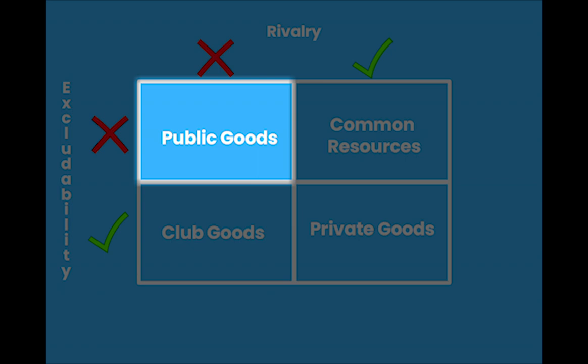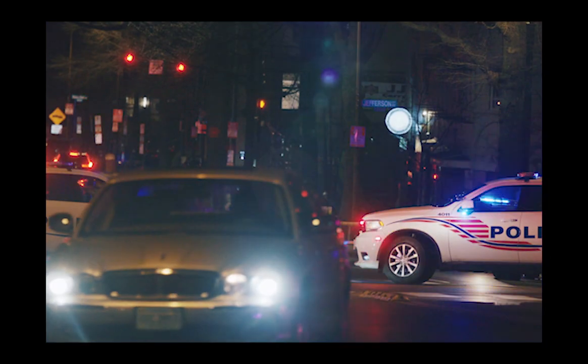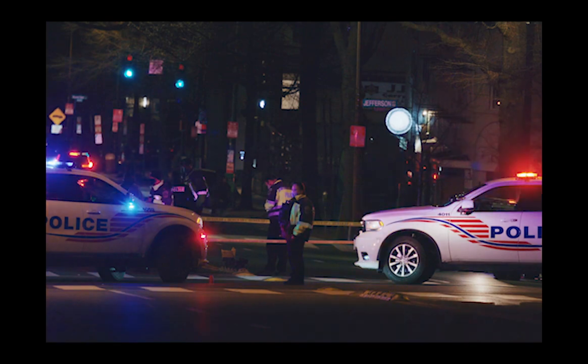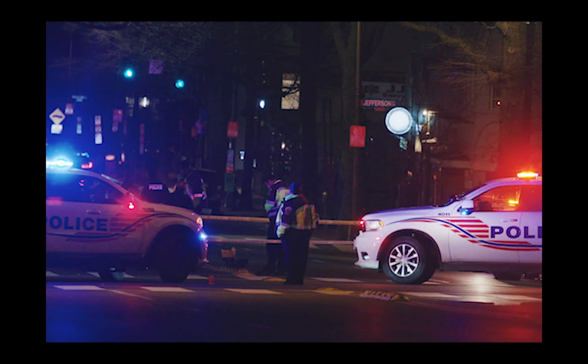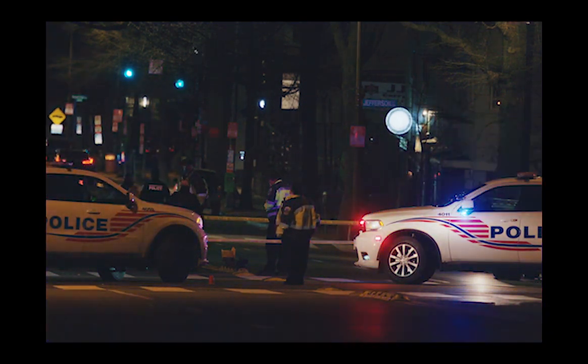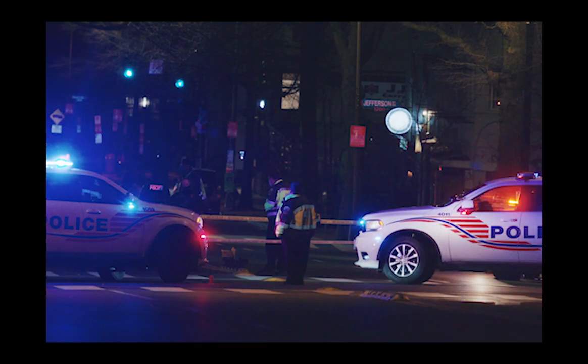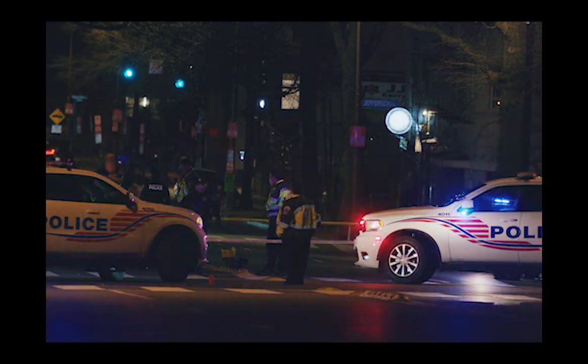Next, we have public goods. Public goods refer to all goods that are non-excludable and non-rival. This means that nobody can be prevented from consuming them and they can be used by multiple people or groups of people at the very same time. These types of goods are typically supplied by the government and paid for by taxpayers. Some examples of public goods include emergency services such as law enforcement or fire departments, as well as things such as national defense or municipal roads.